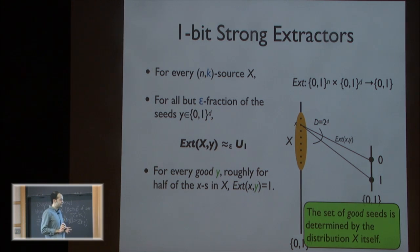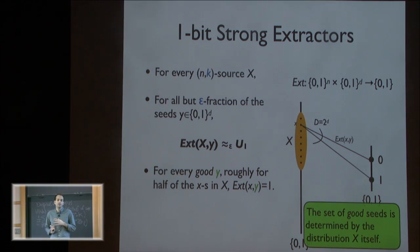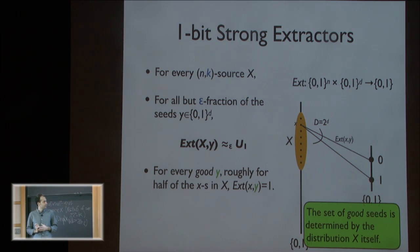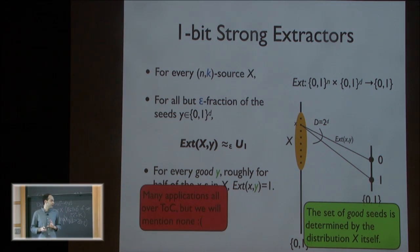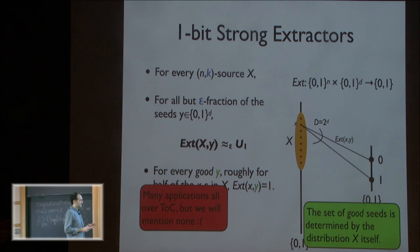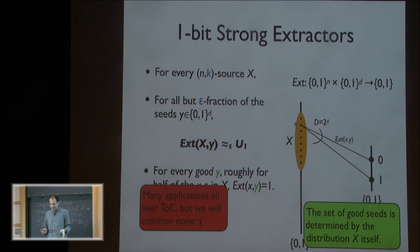An extractor is a function such that for every (n, k) source, for all but an epsilon fraction of the seeds, this random variable is not only supported on {0,1} but is actually close to being a uniform bit. So for every good Y, roughly half of the x's evaluate to 1 and half to 0. The set of good seeds is determined by the distribution itself. Extractors have many applications, but we'll mention none of them here.